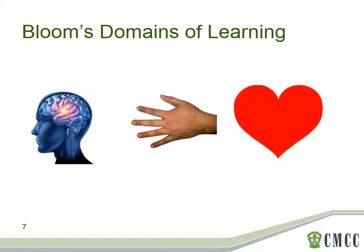If you haven't heard of Benjamin Bloom before, the work that he did around defining the types of learning that happens in education is critical to the development of well-written learning outcomes. The first part of Bloom's work was in the identification of three domains in which learning happens: the cognitive domain, represented by the head, which looks at the knowledge and facts that form much of our learning; the psychomotor domain, represented by the hand, that includes the skills we learn; and finally, the affective domain, represented by the heart, which looks at the attitudes and beliefs that we learn. All are important to the development of competent chiropractors, so the learning outcomes that we write may integrate these different domains of learning.